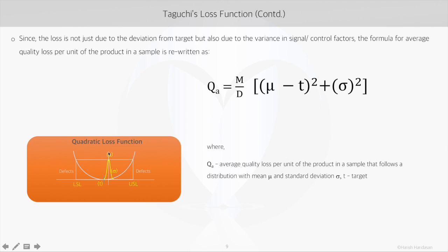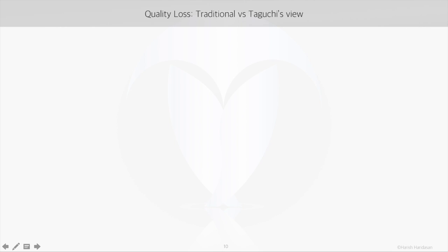Looking at the quadratic loss function for Taguchi's designs, here we have a process that runs at mean mu and standard deviation sigma. The effort in a robust design is to ensure that this mean is always aligned with the target. Conventionally, when our process output goes beyond the defined specifications, we tag that output as defective. But in Taguchi's designs, whenever the process output deviates from the target — moves away from the target — there is a loss to the customer.